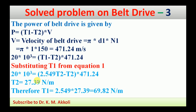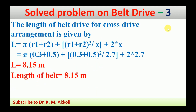Therefore T1 = 2.549 × 27.39 = 69.82 N/m. T1 is the tight side tension (higher value) and T2 is the slack side tension (lower value). For the length of the belt in a cross drive arrangement: L = π(r1 + r2) + (r1 + r2)²/x + 2x = π(0.3 + 0.5) + (0.3 + 0.5)²/2.7 + 2 × 2.7 = 8.15 m.